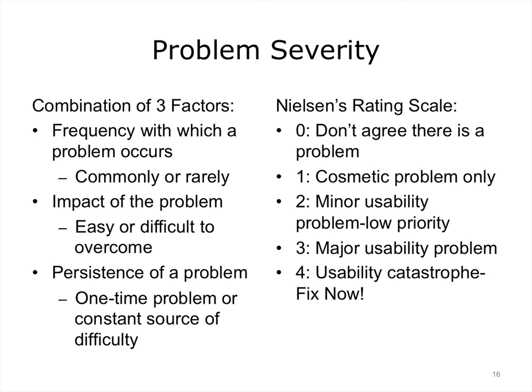The problem severity scale was developed by Nielsen to be used with the heuristic evaluation, and it is an excellent tool that can be used with any usability evaluation method. Rating the severity of problems is a very important step in usability analysis. The severity is a combination of three factors: the frequency with which a problem occurs, the impact of the problem, and problem persistence — i.e., does it quickly go away or is it a constant irritant. The rating scale ranges from a cosmetic problem to a usability catastrophe.